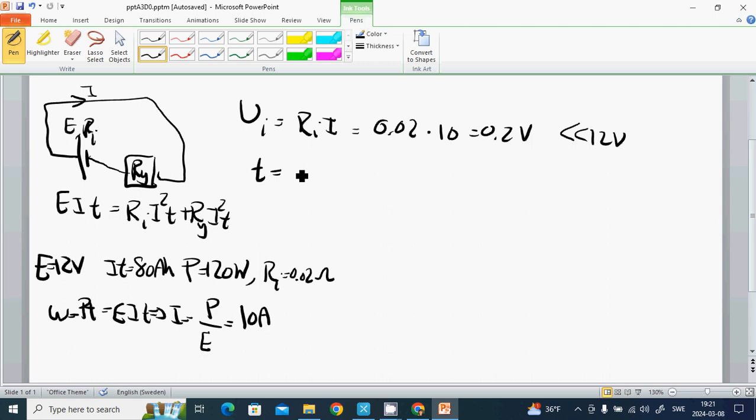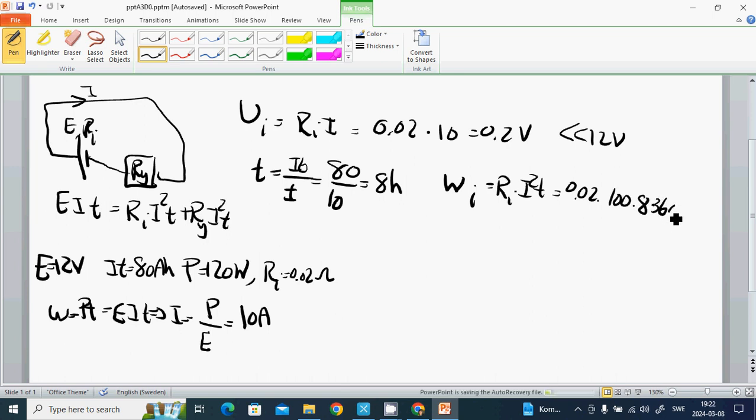The time is capacity divided by I, which is 80 divided by 10, which is 8 hours. The inner energy or warm energy Ri times I squared times T equals 0.02 multiplied by 100 multiplied by 8 multiplied by 3600 seconds, and it is 57.6 kilojoules.